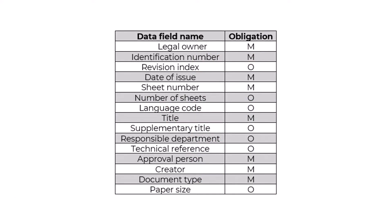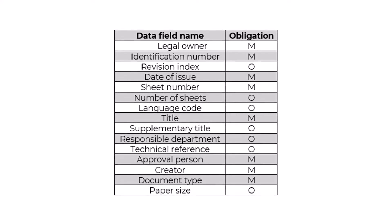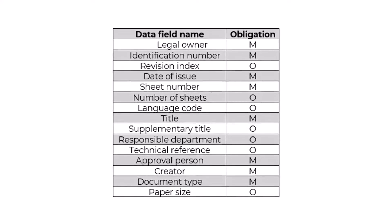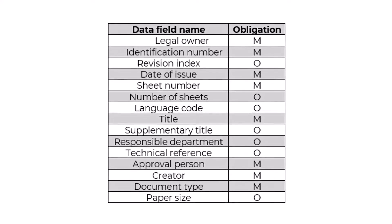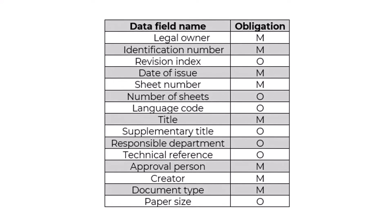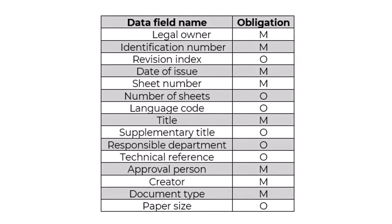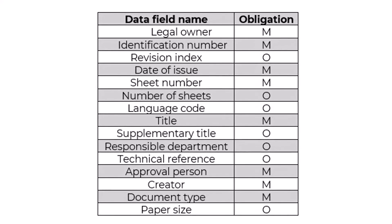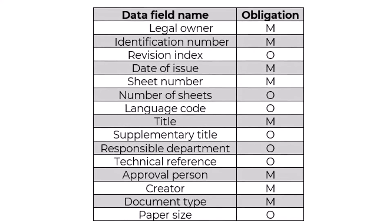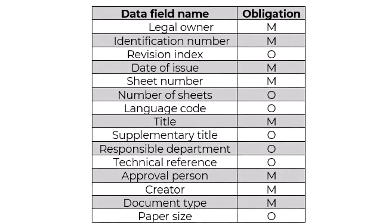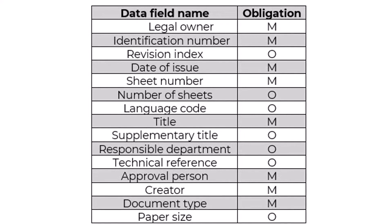Mandatory title block fields are: legal owner, identification number, date of issue, sheet number, title, approval person, creator, and document type. Optional title block fields are: revision index, number of sheets, language code, supplementary title, responsible department, technical reference, and paper size. Other data fields are presented outside the title block only when used — for example, scale, projection symbol, general tolerances, and surface texture requirements.